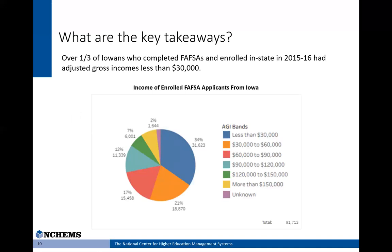On this example from the Iowa College Aid project, this chart was created to answer the question: how many of our students fall into each income band? Because this chart was intended to show what portion of the whole represented each student group, we used a pie chart. You can find the answer pretty easily and identify how big the slice of pie is for all the various groups of students. We added a note that emphasizes the big takeaway: over one-third of Iowans who completed FAFSAs were from low-income families.